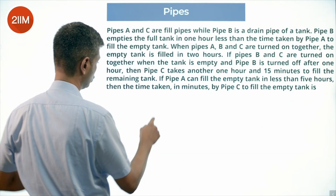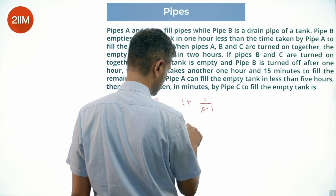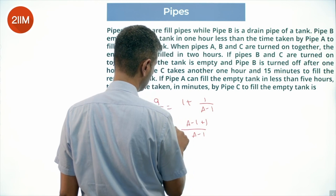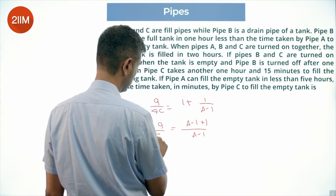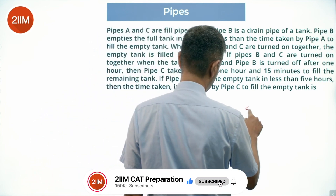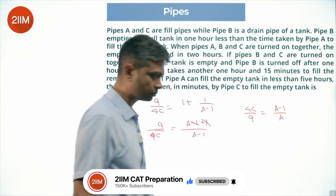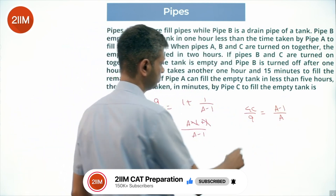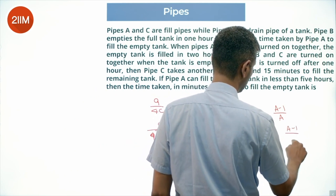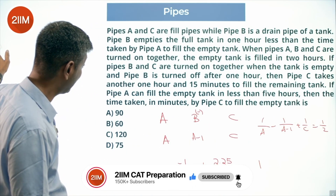From the second equation: 2.25/C equals 1 plus 1/(A-1), which is 9/(4C) equals (A-1+1)/(A-1) equals A/(A-1). So rearranging: 4C/9 equals (A-1)/A, giving us C equals (9/4) times (A-1)/A. We'll plug this back into the first equation.